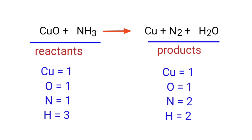The number of atoms are not balanced on both sides. To balance the chemical equation, we need to make use of coefficients. A coefficient is a number that we place in front of a chemical formula.